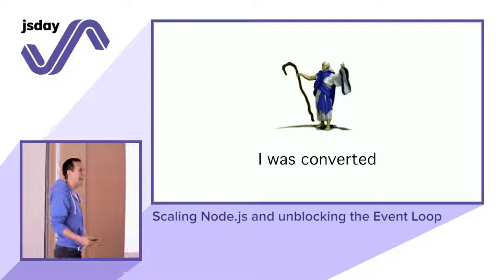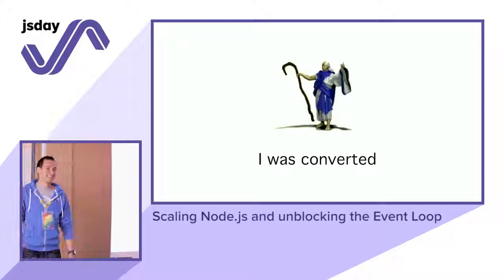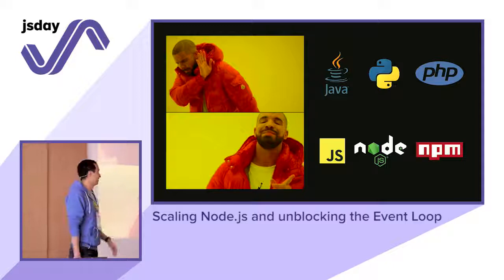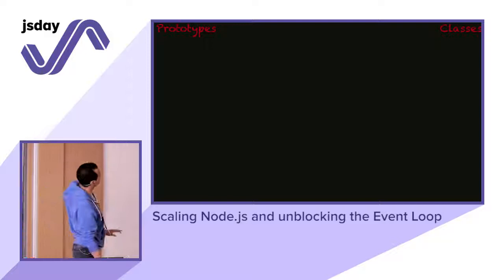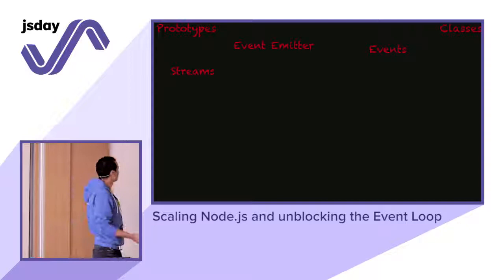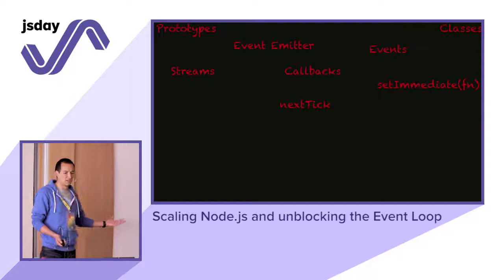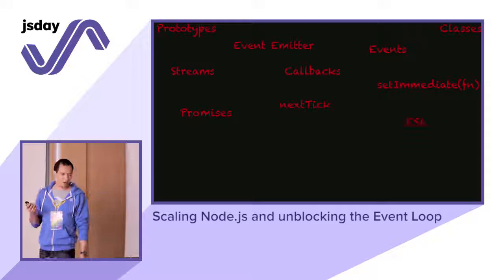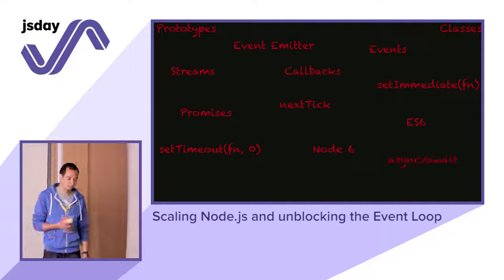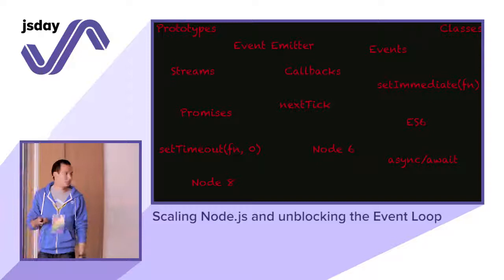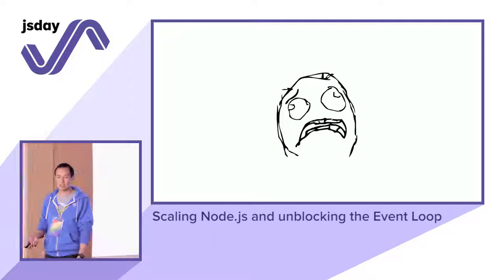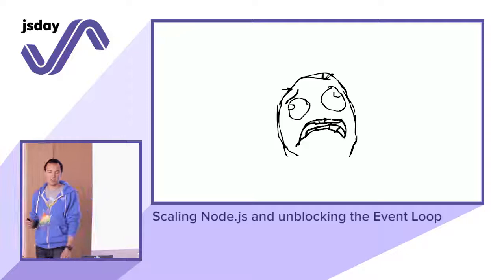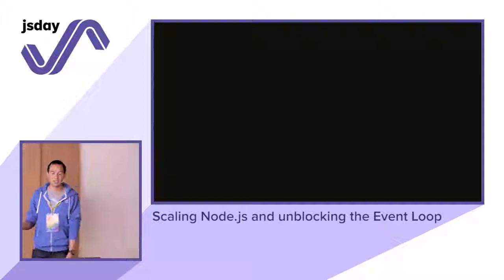I was fully converted — I needed to be there. But there were so many things to learn: classes, prototypes, event emitters, events, streams, callbacks. Node 6 came out after Node 4 when I joined. There were promises, ES6, async/await in Node 7 — just too much. It took me a lot of time to really feel confident working in Node.js and use it in production every day.